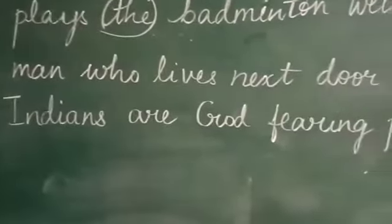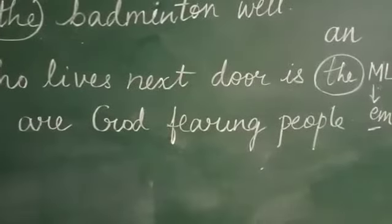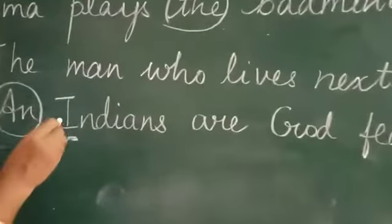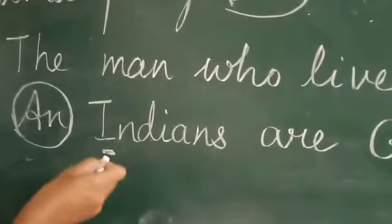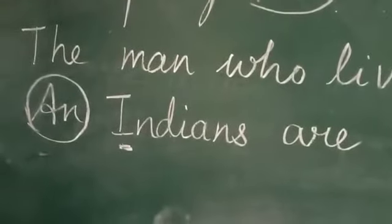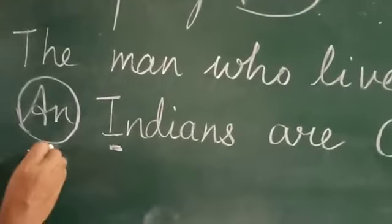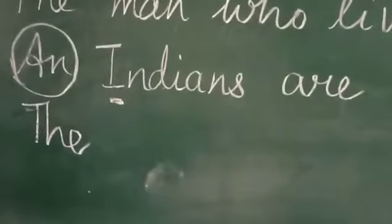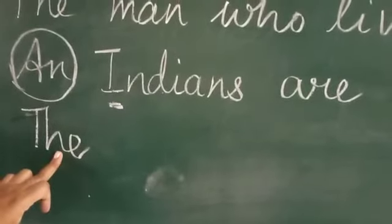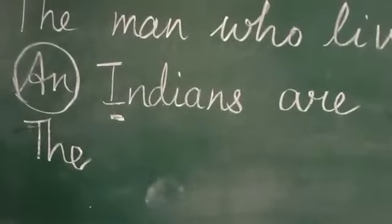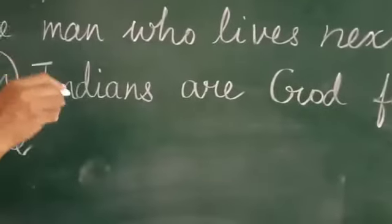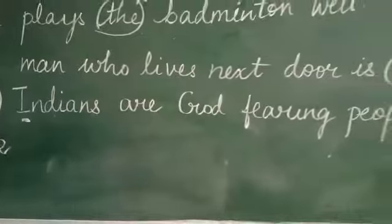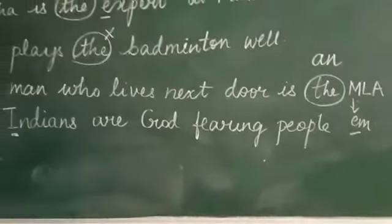Next: 'An Indians are God-fearing people.' Here you saw 'I', thought it was a vowel with a vowel sound, and placed 'an'. But we are talking about a particular nationality, so we are going to use 'the'. 'The Indians' — we are talking about that particular nationality. So the correct sentence is: 'The Indians are God-fearing people.' Not 'an'.